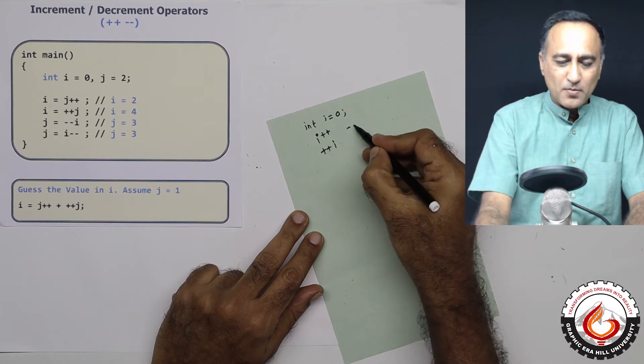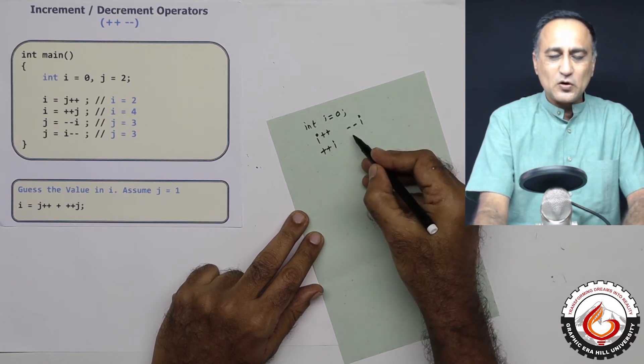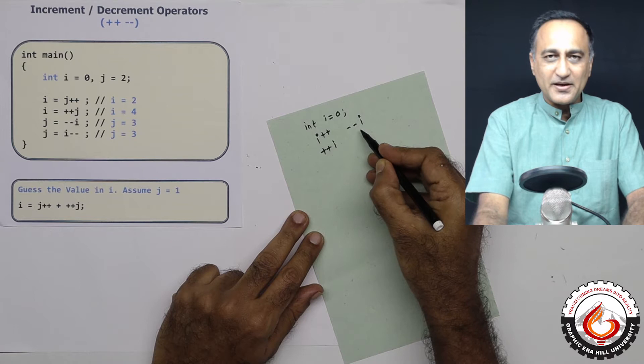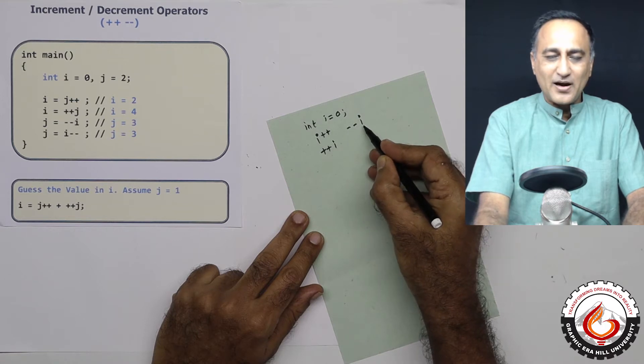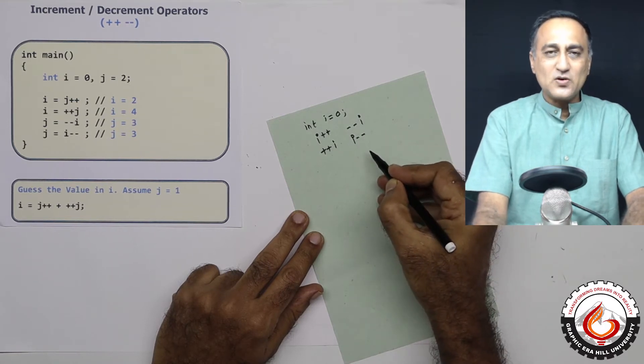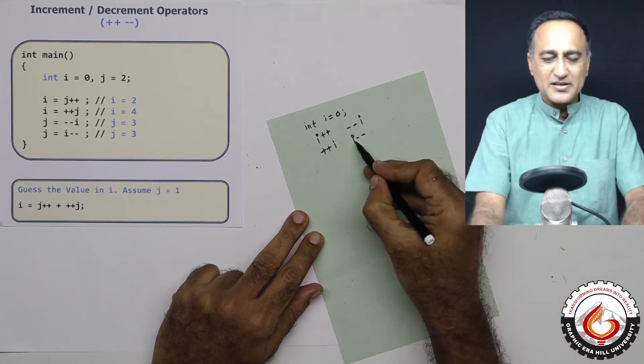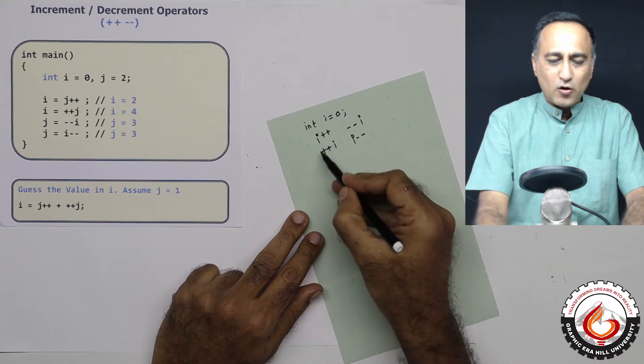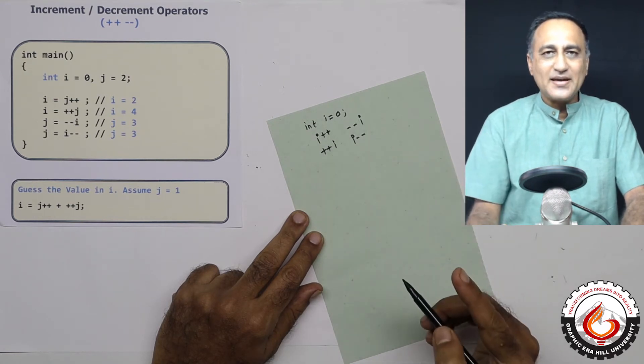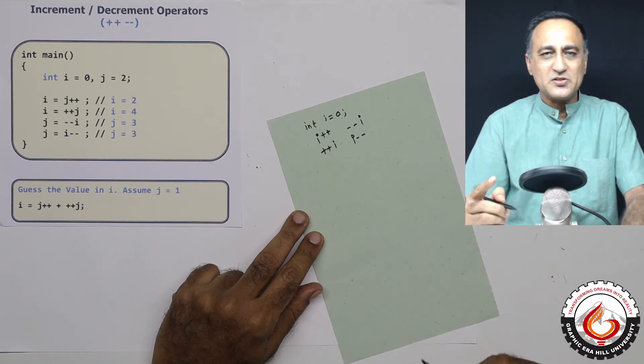Similarly, if I do --i, this is called the prefix decrement because I am decreasing the value of i. And i-- is called the postfix decrement because the -- comes after i. In all these cases, the value of i will increase or decrease by one.